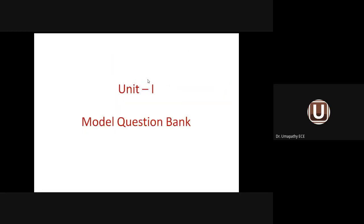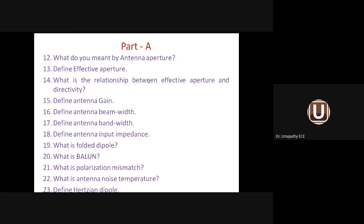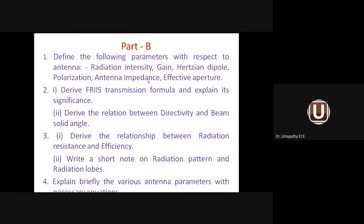Let us see the model question bank — possible Part B questions. Under Unit 1, one 16-mark question type is: Define the following parameters with respect to the antenna. All antenna parameters will be asked — radiation intensity, gain, Hertzian dipole, polarization, antenna impedance, and effective aperture.